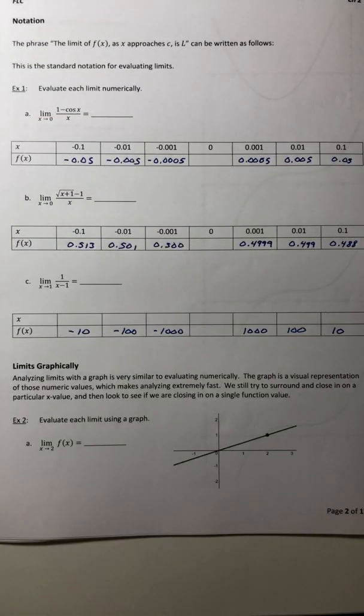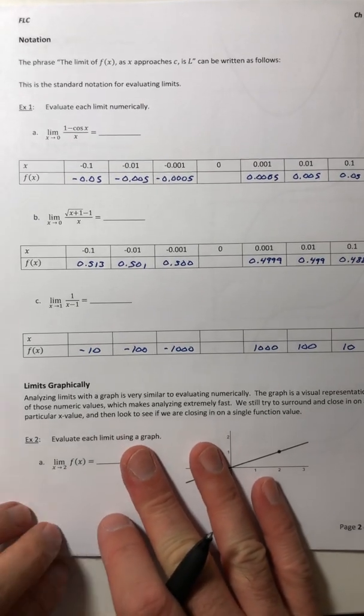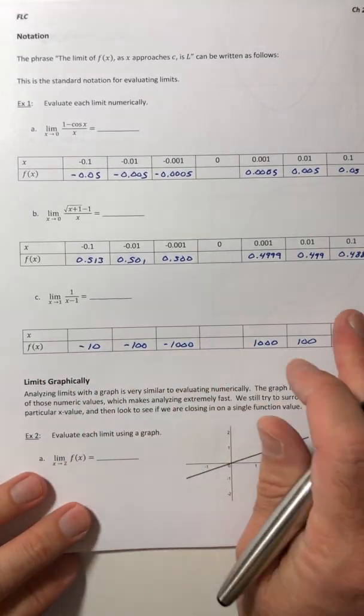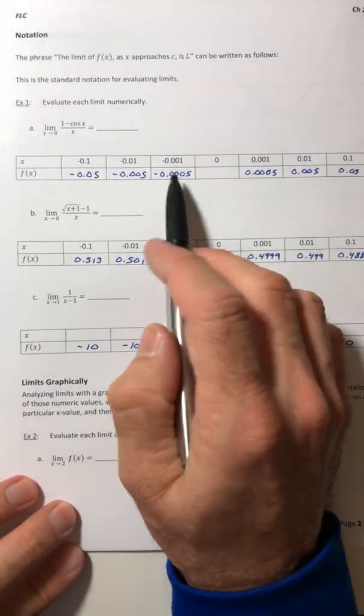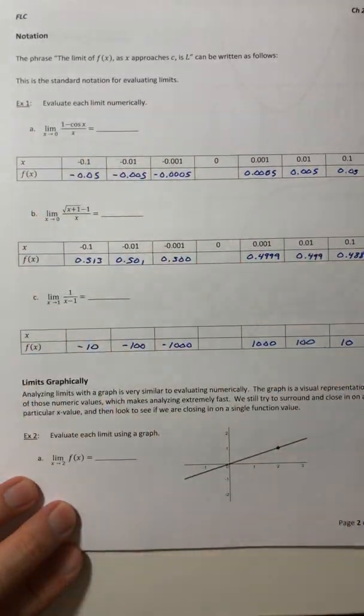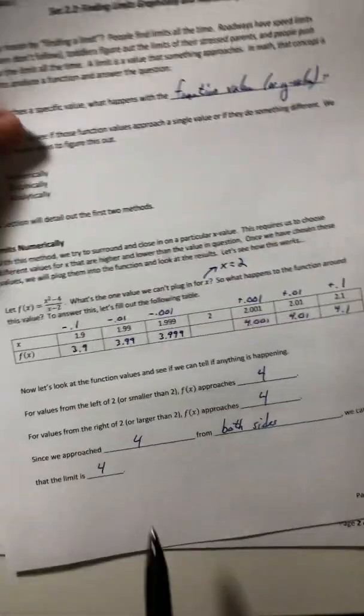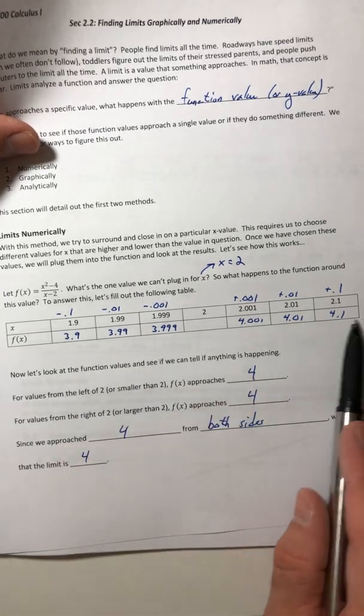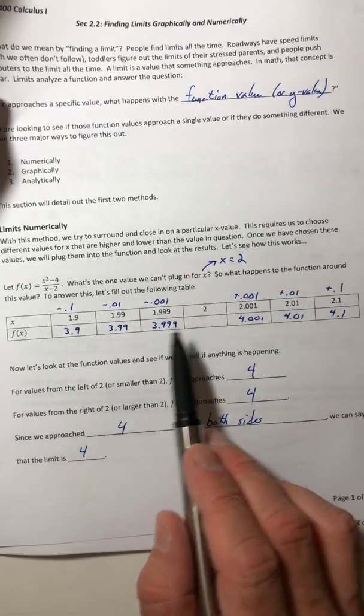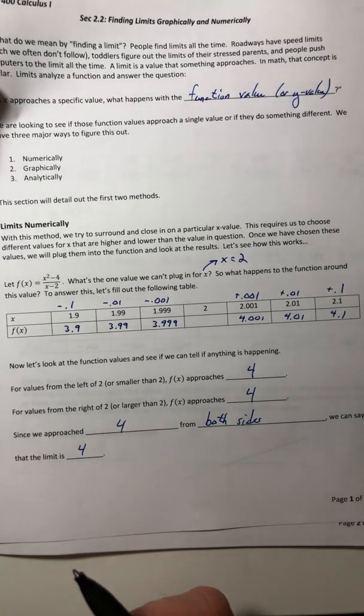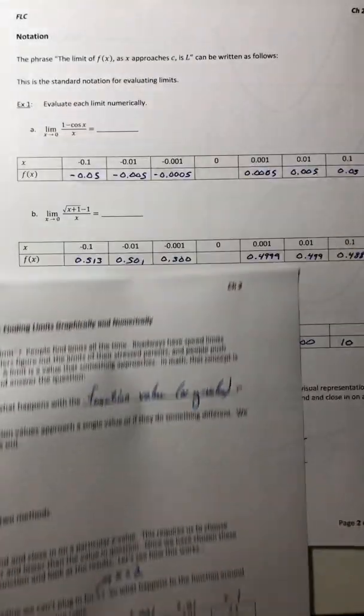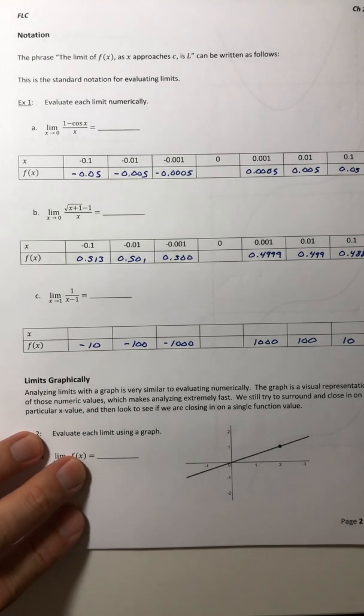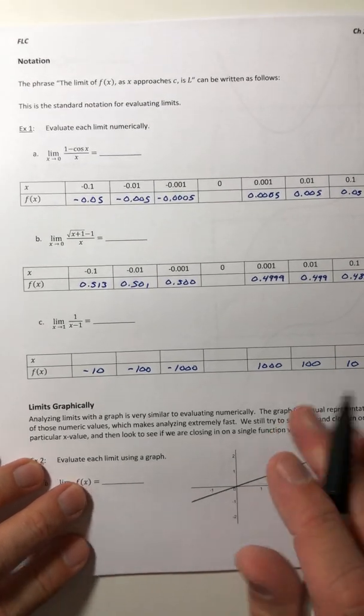Alright. So that's basically what a limit is going to do. If we look at the x values, if they approach something from either side, do the y values approach something as well? And sometimes they do, sometimes they don't. It just kind of depends on your function.